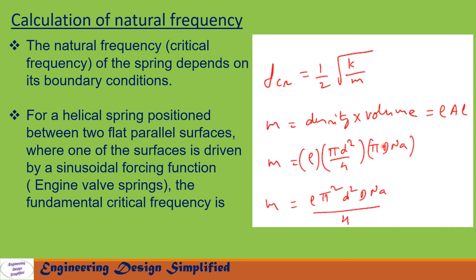D is the coil diameter and d is the wire diameter. This can be further written as m equals rho pi squared D squared d N_a by 4.